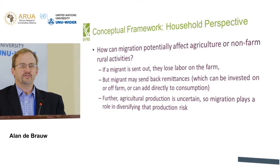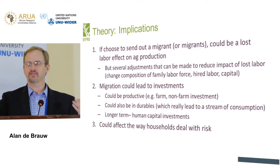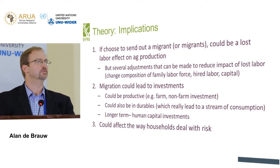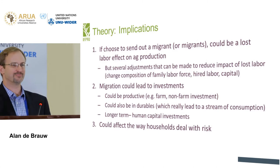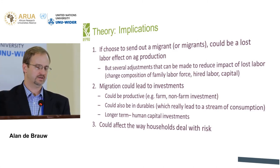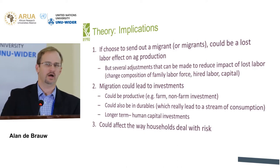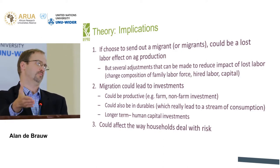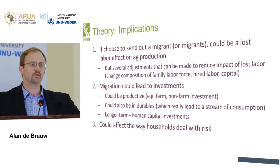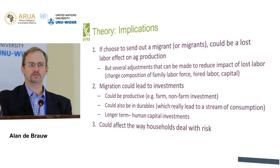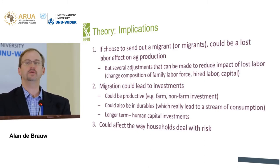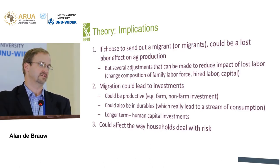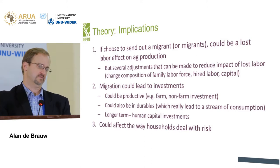So the theory tells us we need to figure out empirically whether there's a lost labor effect, because people may make adjustments. You can change the composition of family labor — have children work a bit more, have those left behind work harder, or hire outside labor, though monitoring agricultural labor is harder since agriculture is spatially dispersed. You can also rent or purchase capital to replace that labor. Migration could also lead to productive investment on or off the farm, or in durables.